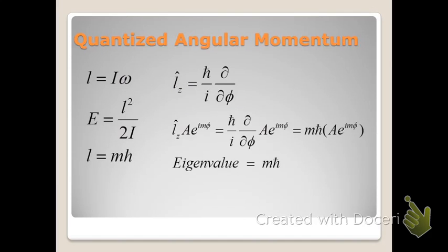If we operate on our wave function with the angular momentum operator, we get m h-bar times the original. Because we get m h-bar times the original wave function, the eigenvalue is m h-bar, as noted before.